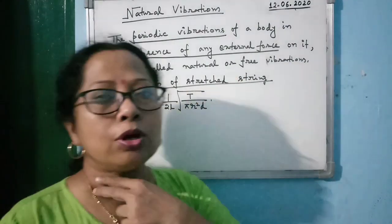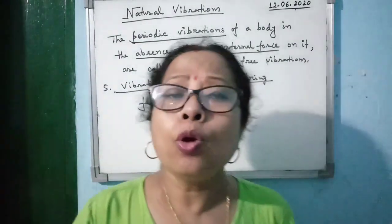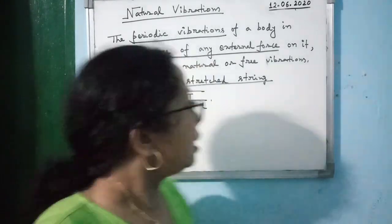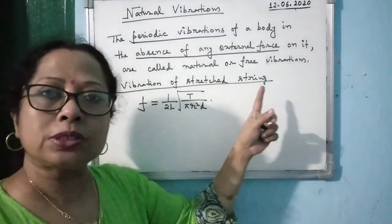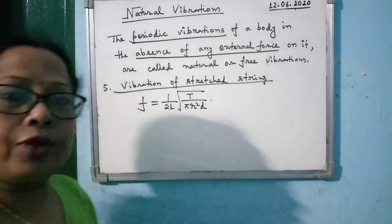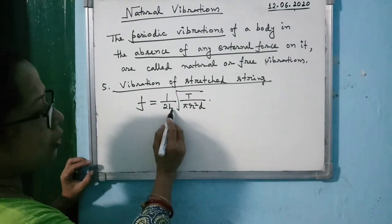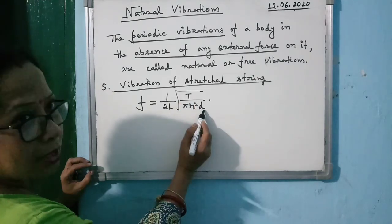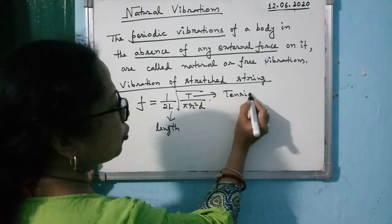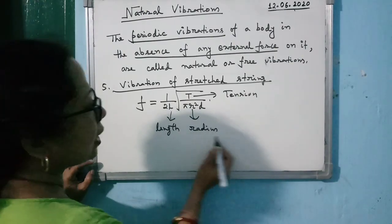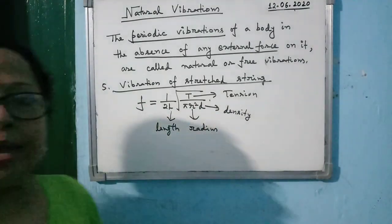Vibration of a straight string is the most important example from the board exam point of view. Musical instruments like sitar and violin use straight strings to produce music. When a straight string is struck or plucked, the frequency of sound produced is given by: F = 1/(2L) × √(T / (πR²D)), where L is the length of the string, T is the tension, R is the radius, and D is the density of the material.